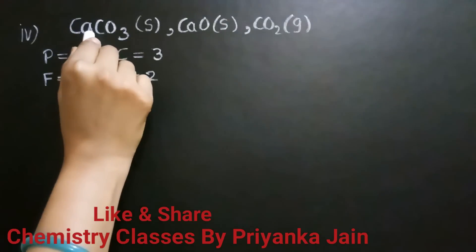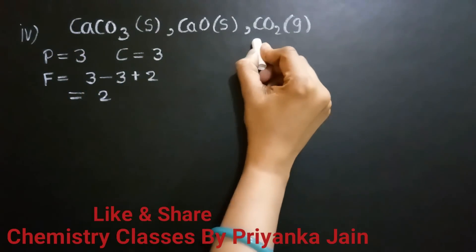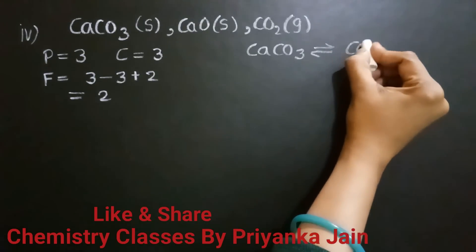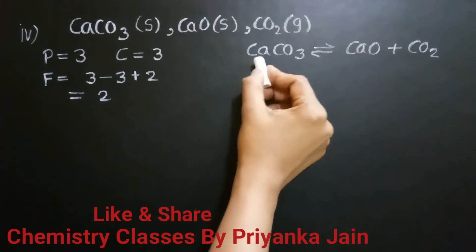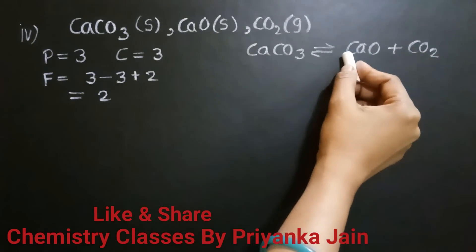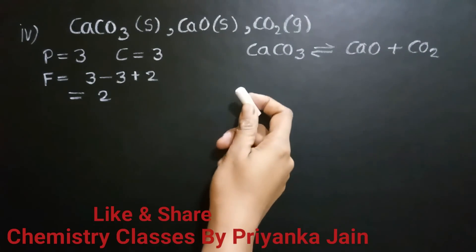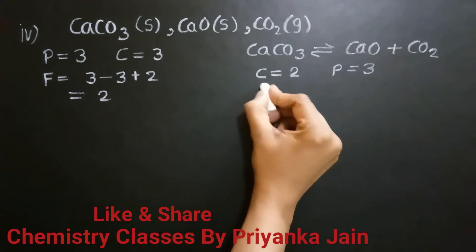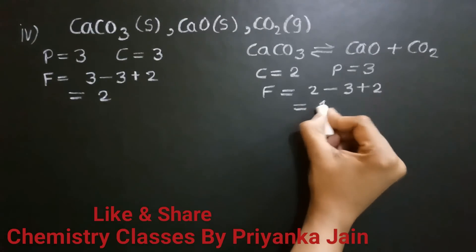If instead CaO and CO₂ are formed by the decomposition of calcium carbonate — giving the equilibrium CaCO₃ ⇌ CaO + CO₂ — then if we know the concentrations of any two of these, we can find the third. So we need only two components, and the number of phases remains three. Therefore F = C − P + 2 = 2 − 3 + 2 = 1. The degree of freedom is one.